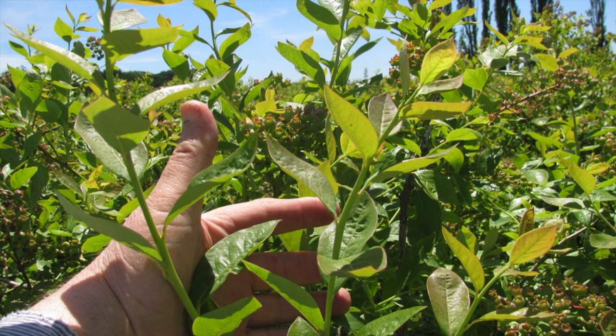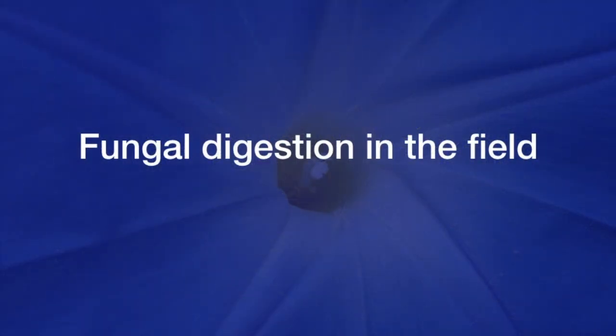An example of observing high lipid content in the field is when we see glossy, waxy leaves and a glossy sheen on the leaf surface — this is an indicator of a plant that has a very high oil content. I wanted to demonstrate some examples of fungal digestion in the field and what that can look like.